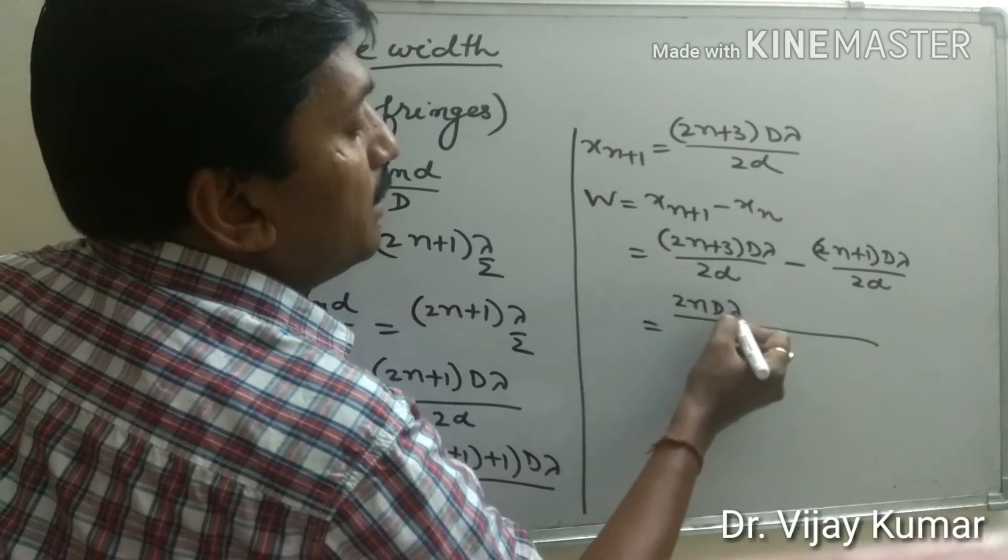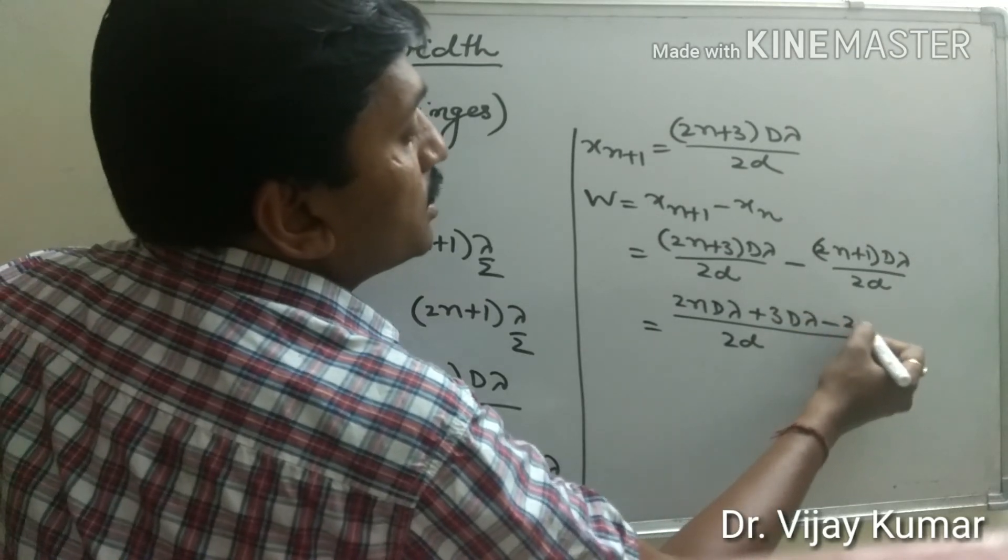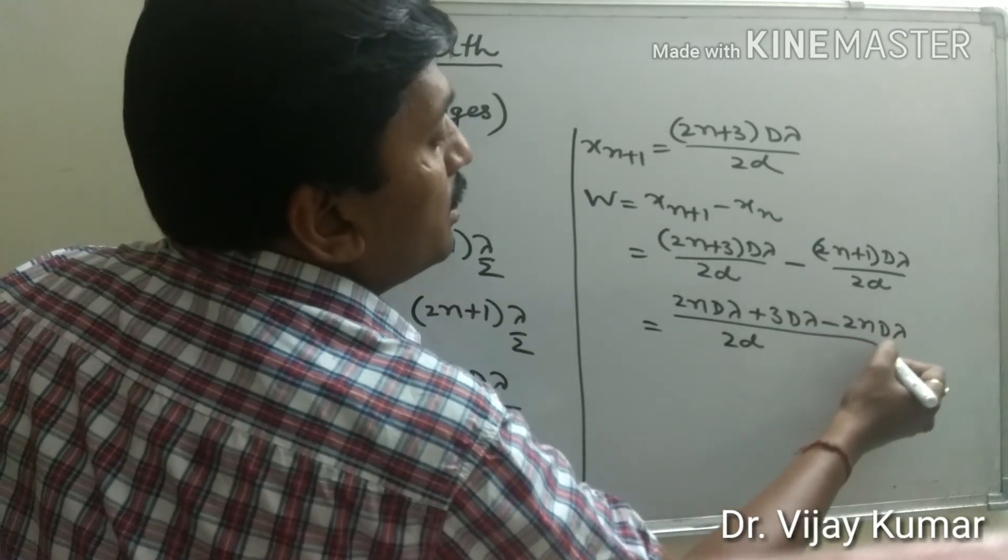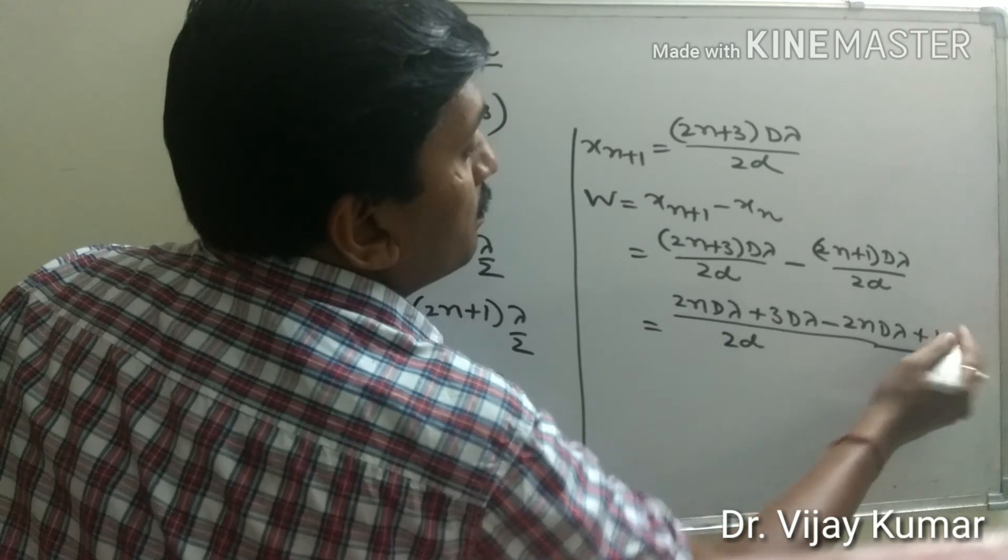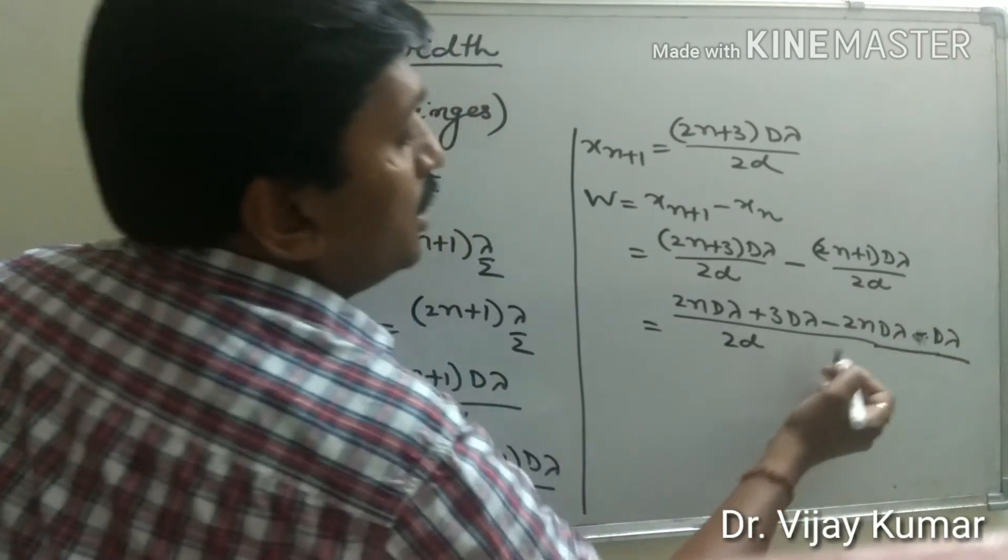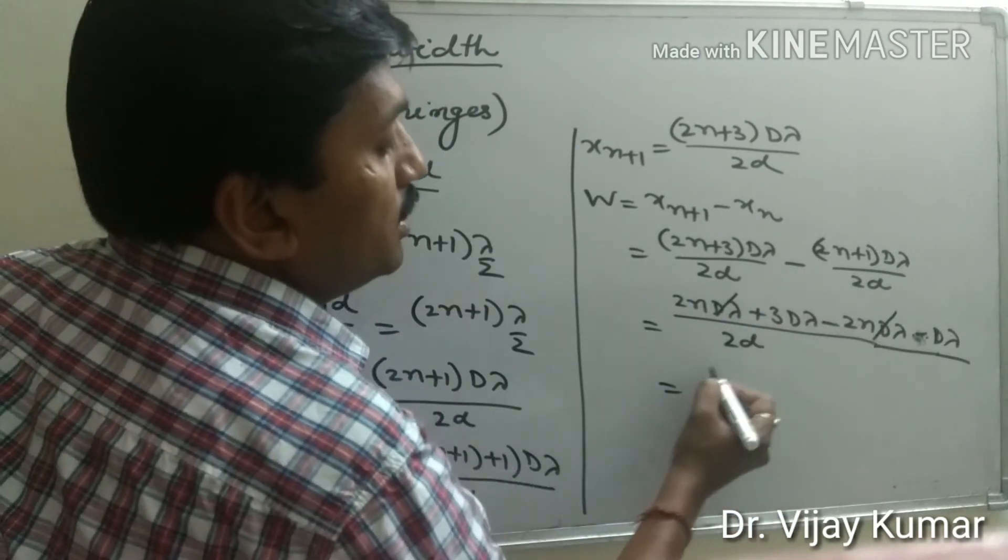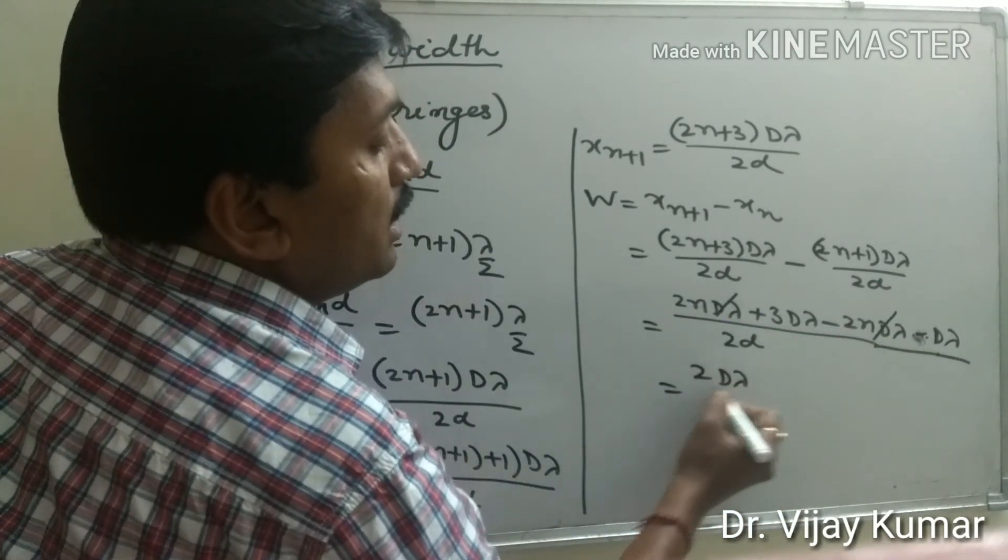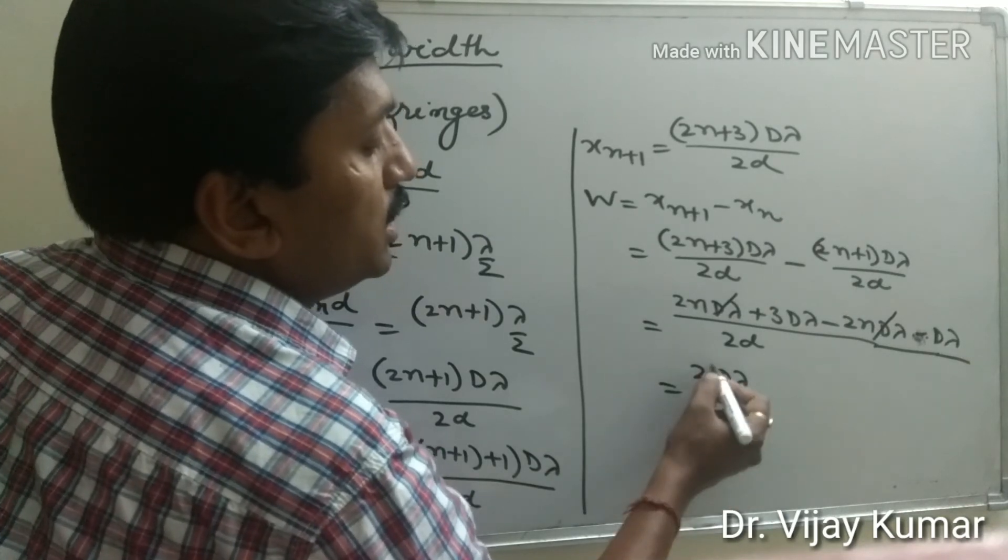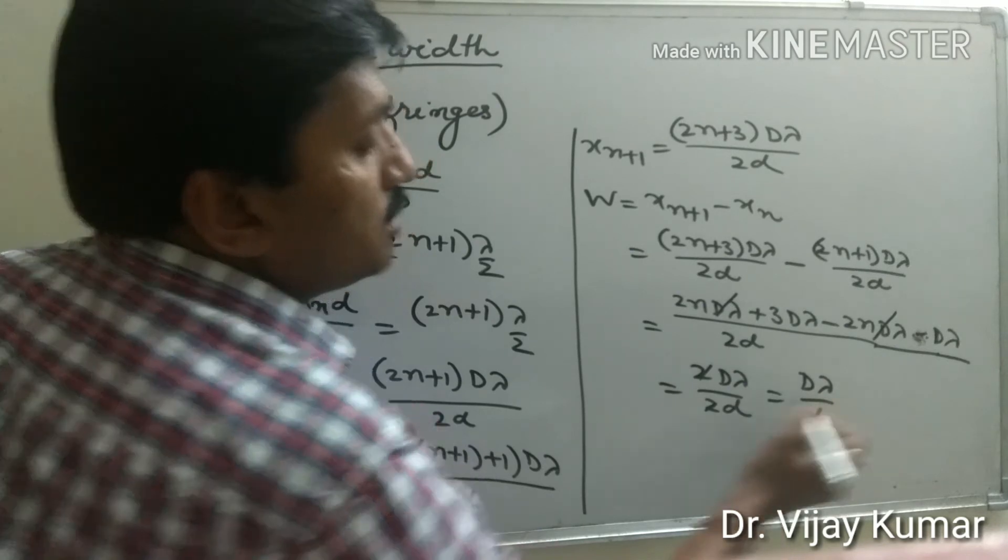Expanding this gives 2nDλ + 3Dλ - 2nDλ - Dλ. The 2nDλ terms cancel out, and 3Dλ - Dλ = 2Dλ. So we get 2Dλ/2d, which simplifies to Dλ/d.